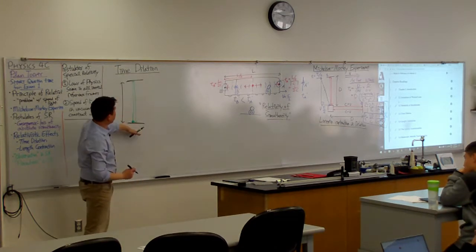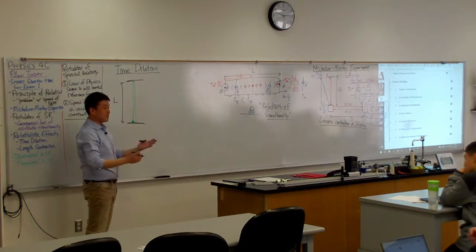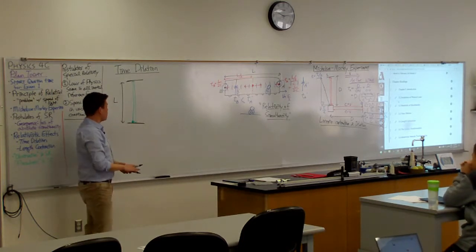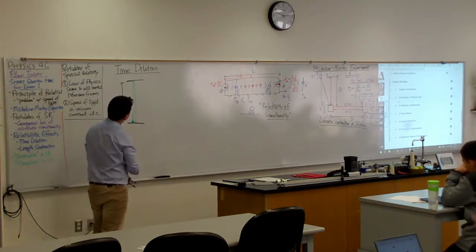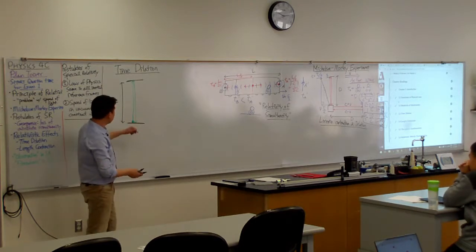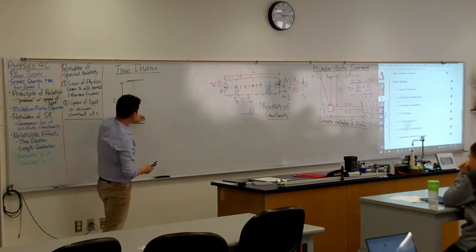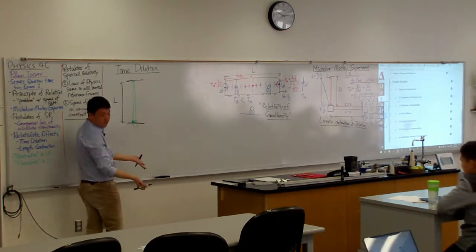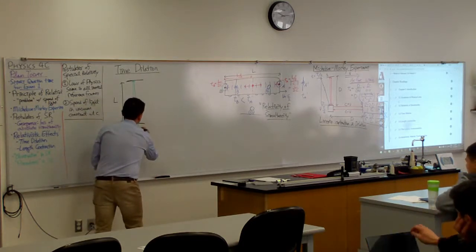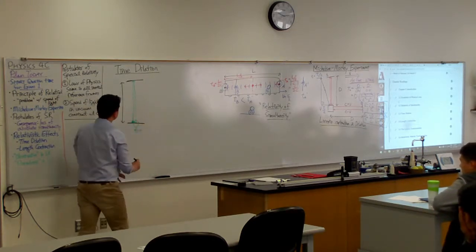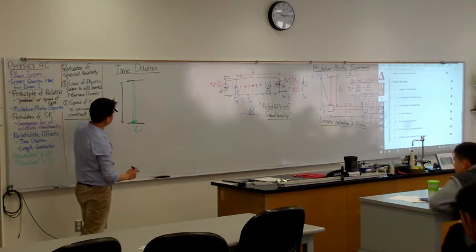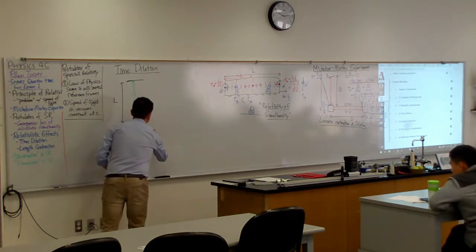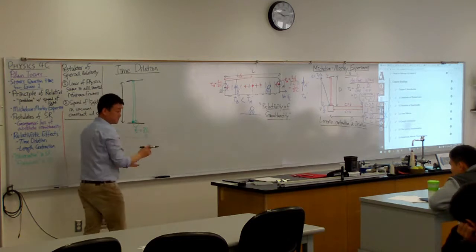Then I can use that round trip as my ticking of a clock. Or, I guess, yeah, let me use the round trip. As it goes up, comes down, when it comes down here, then some amount of time has passed. That amount of time, T, should be equal to 2L divided by C.